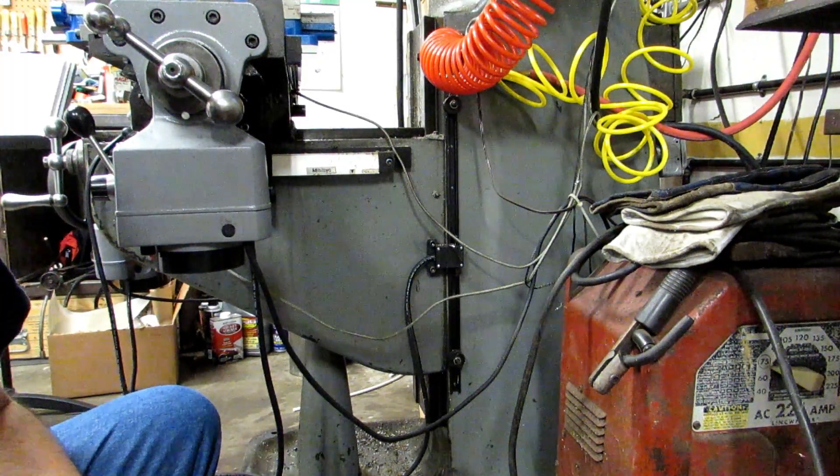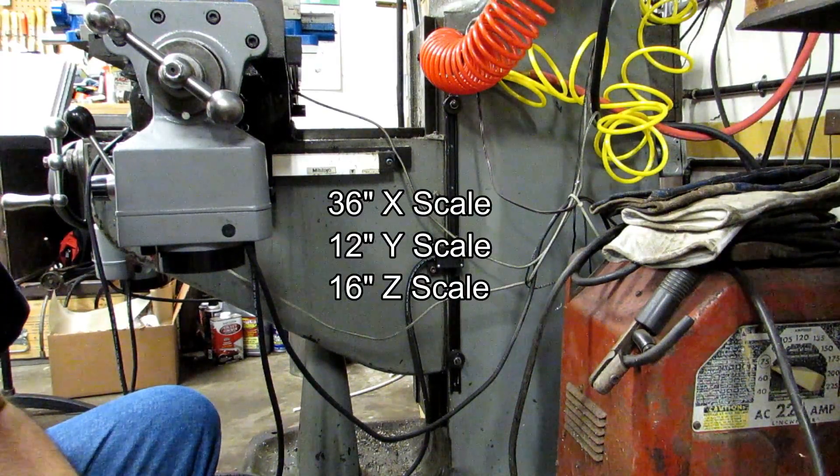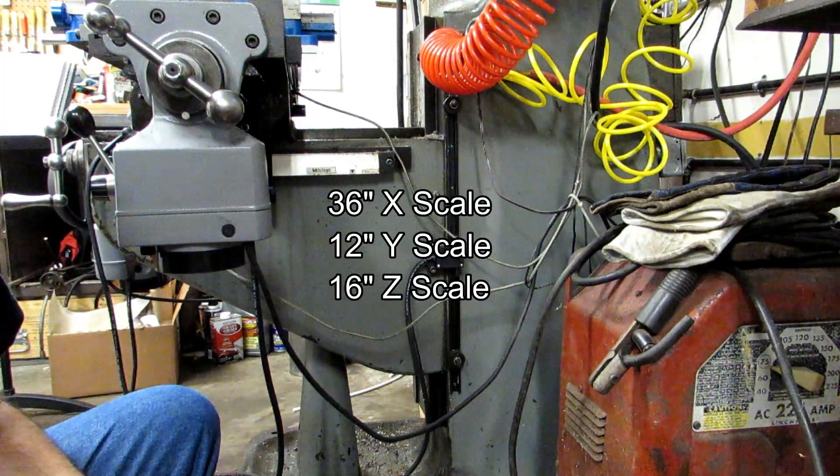So in the case of this digital readout installation I'm going with a 36 inch X travel, 12 inch Y, and a 16 inch knee.